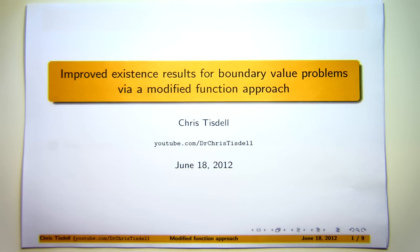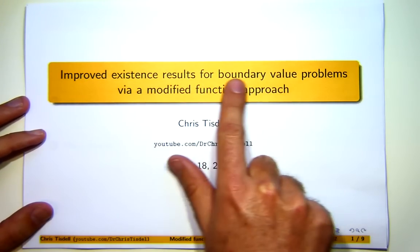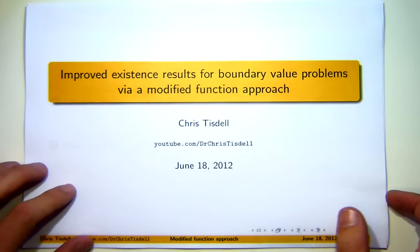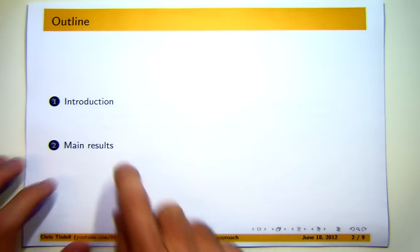Now the ideas in this presentation build on some previous results of mine and even though technically speaking this is new research, I've put it together so that it will be understandable by a good undergraduate student, for example, say a second or third year undergraduate student in mathematics. The title of this presentation is Improved Existence Results for Boundary Value Problems via a Modified Function Approach.